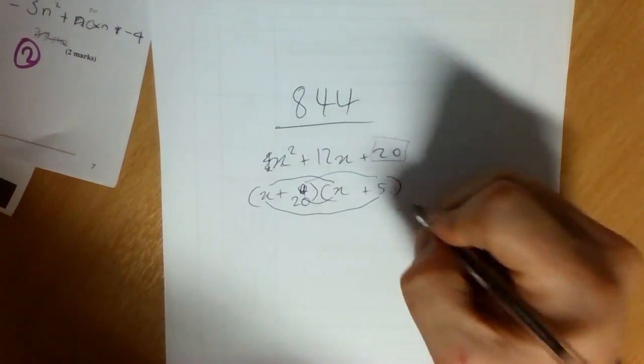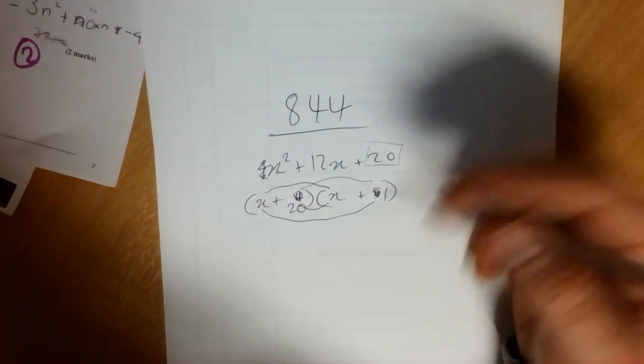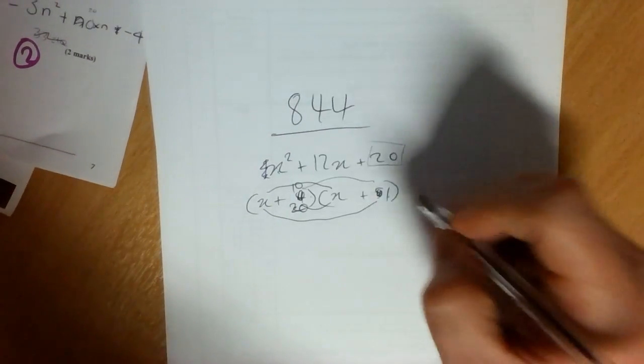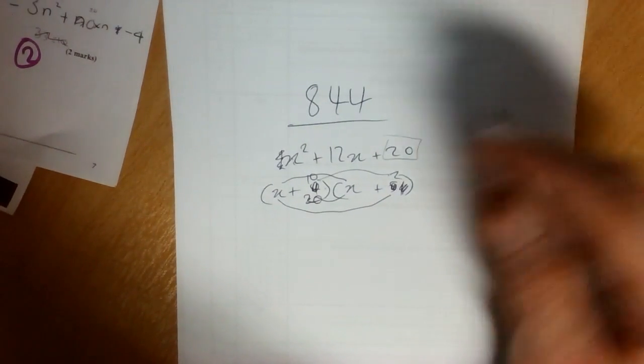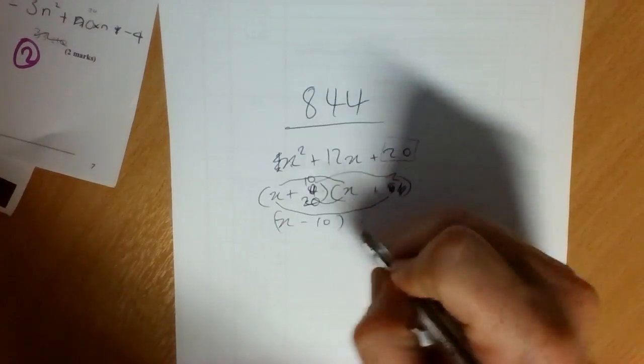So just try something else. Try 20, try 1. That won't work either. The combination that eventually works is 10 and 2. Also try negative combinations if you need to.